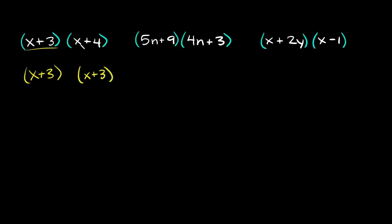Now what you're going to do is take your other parentheses right here. So we have an x and a 4. We're going to put an x here and a 4 there. Since this 4 is positive 4, we're going to put plus 4 right there. Now all you have to do is take this term on the outside and distribute it inside the parentheses.